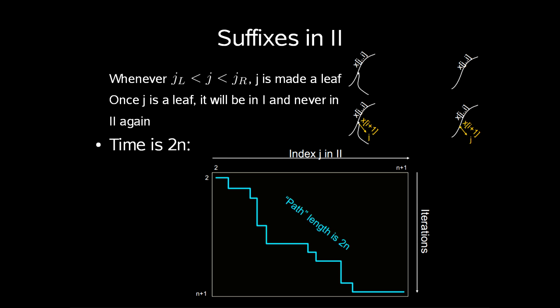Now, all suffixes in part 2 are made into leaves. Whenever jl is less than j, which is less than jr, j is made a leaf. So once j is a leaf, it will be in 1 and never be in part 2 again.